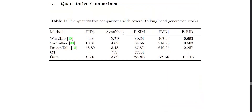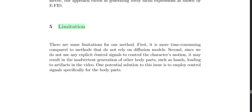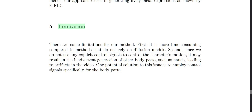They did some quantitative comparisons with previous talking head generation models — Wav2Lip, SadTalker, DreamTalk, and GT — and the EMO model wins on about four out of five benchmarks. EMO does have some limitations: because they don't use explicit control signals to control the character's motion, it might result in inadvertent generation of other body parts such as hands, leading to artifacts in the video. One potential solution they propose is to employ direct control over the specific body parts that appear within the video.